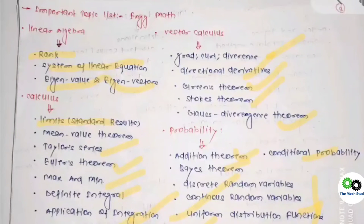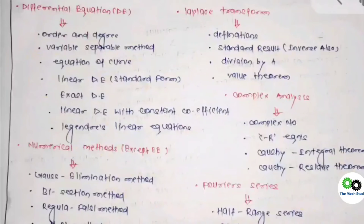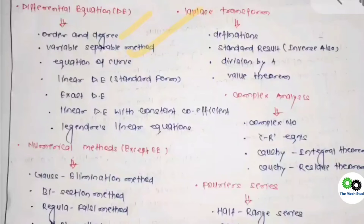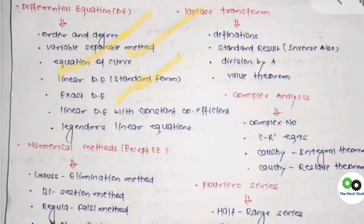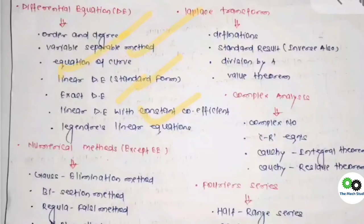For Probability, remember the standard types — additional theorem, conditional probability, random variables, discrete distributions, and other topics mentioned here. For Differential Equations, the first important question type is order and degree. After that, consider the variable separable method, linear differential equations, exact differential equations, and linear differential equations with constant coefficients. Remember the standard forms given in questions — these are the topics required to clear the differential equations section.